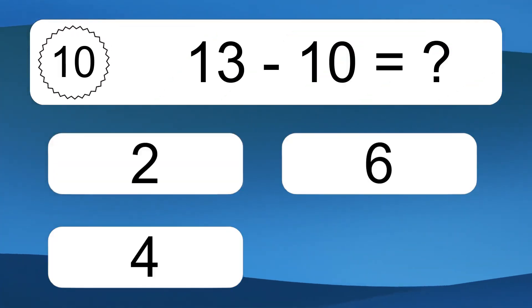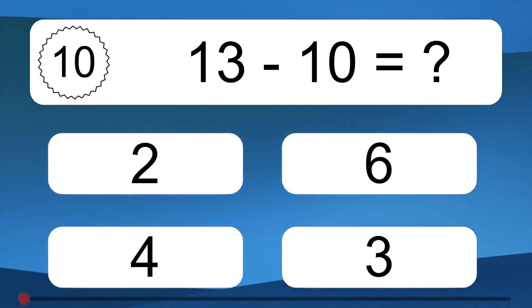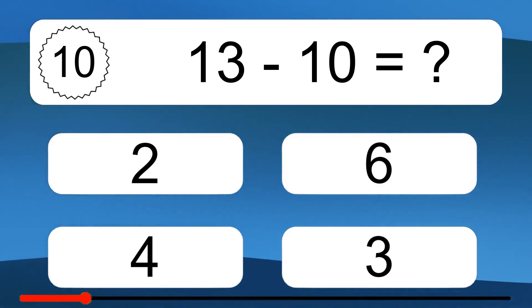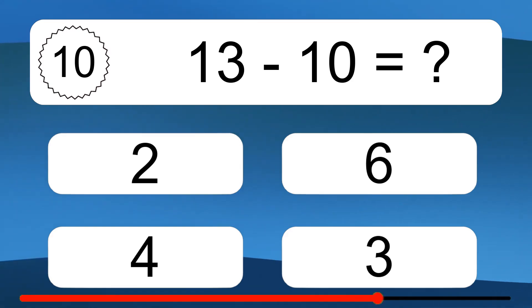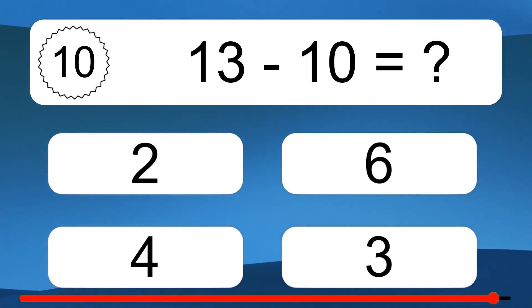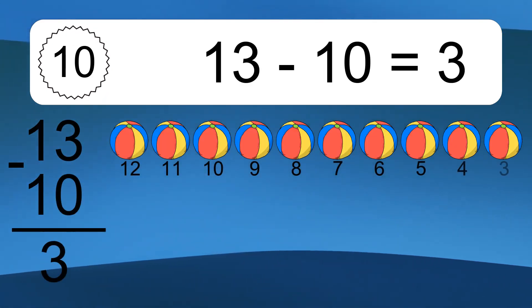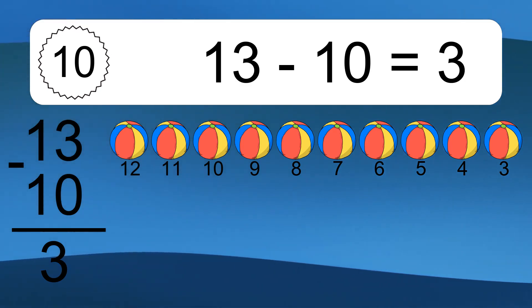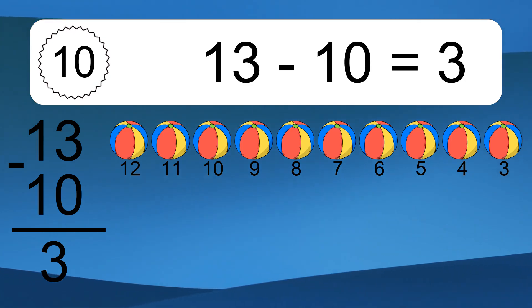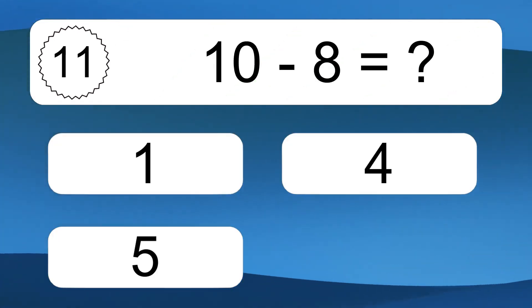13 minus 10 equals what? 13 minus 10 equals 3. Let's count it. 12, 11, 10, 9, 8, 7, 6, 5, 4, 3.